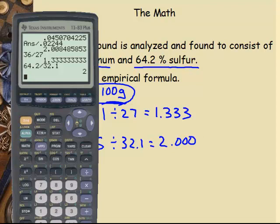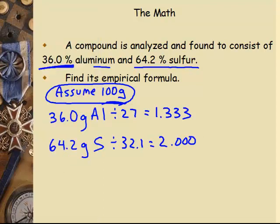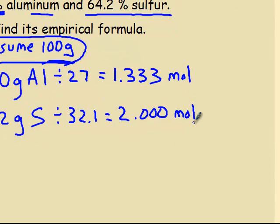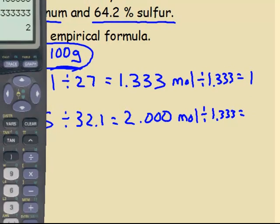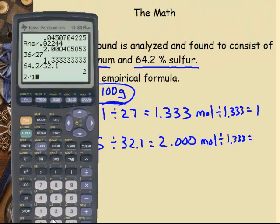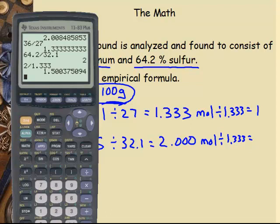So now I have found the mole ratio. It is a 1.333 to 2 ratio. But that is not in its lowest terms. Don't forget, you have to find it in its lowest terms, which means I've got to divide them both by 1.333. So that's a 1. So now 2 divided by 1.333 is a 1.500.